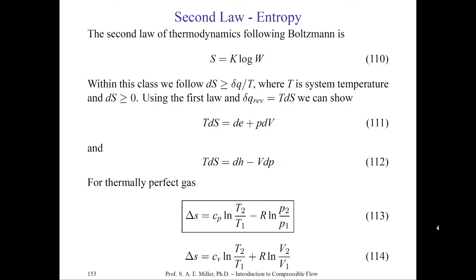This theory comes out of quantum mechanics, but in this class we'll use it through traditional thermodynamics. We'll follow that dS, the small change in entropy, will always be greater than or equal to delta Q divided by the temperature T of the system. So the small change in entropy must always be greater than or equal to zero. Using the first law and delta Q reversible equals T dS, we can show equations 111 and 112.